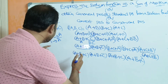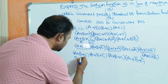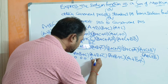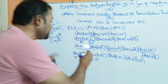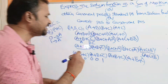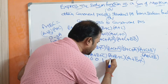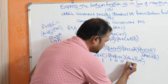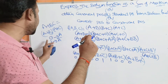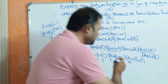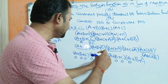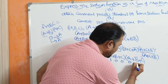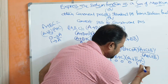In product of sum representation, 0 means the actual variable and 1 means the complement of the variable. So A + B + C corresponds to 0, 0, 0. A + B + C̄ corresponds to 0, 0, 1 since C̄ is a complement. Ā + B + C corresponds to 1, 0, 0 since Ā is a complement. A + B̄ + C corresponds to 0, 1, 0 since B̄ is a complement.